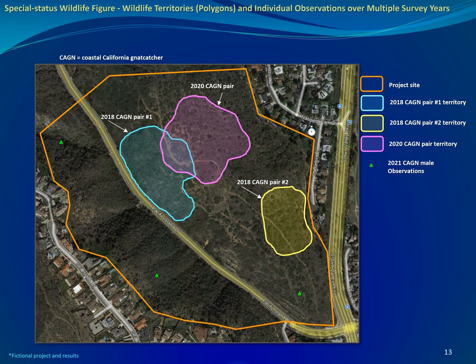Here is another example Special Status Wildlife figure, but for animal territories. Three years of surveys were conducted in 2018, 2020, and 2021. In 2018, two pairs of coastal California gnatcatchers were present within the project site and each pair had established a territory. Pair one's territory is mapped as a blue polygon and pair two's territory as a yellow polygon. In 2020, one pair was observed with a territory mapped as a pink polygon. In 2021, three separate male gnatcatcher observations were made, but no territories were established.